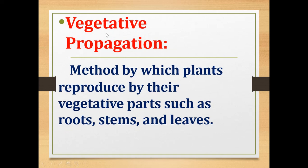The next method is vegetative propagation. In this method, the vegetative parts of the plants reproduce. Each vegetative part of the plant can produce a new plant. It is the method by which plants reproduce by their vegetative parts such as roots, stems and leaves.